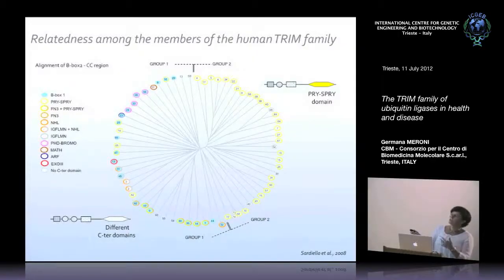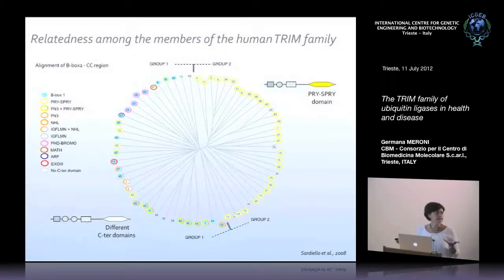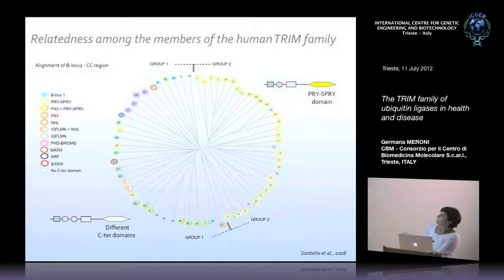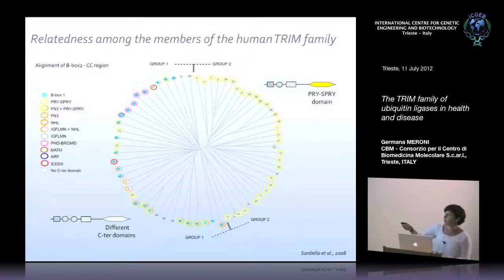Looking back at where the invertebrate Trim genes fall within the two groups, it is clear they fall in the most ancient portion of the family. Group 2 genes appear to be only present in vertebrates, more recently originating during evolution. Some of them are clustered within the same chromosomal localization. For group 1 genes, you can trace a one-to-one strict orthology relationship among different mammalian species.